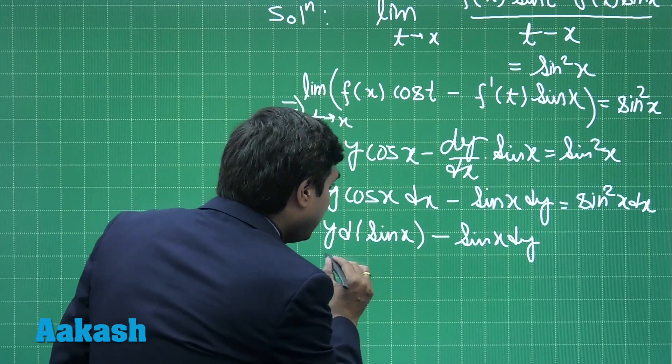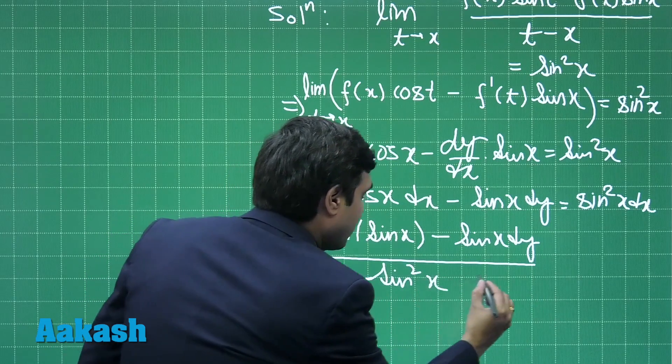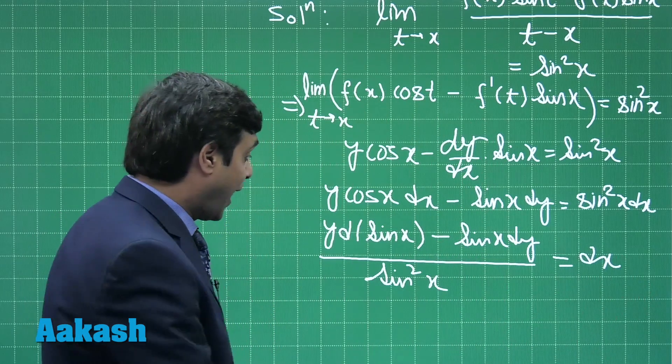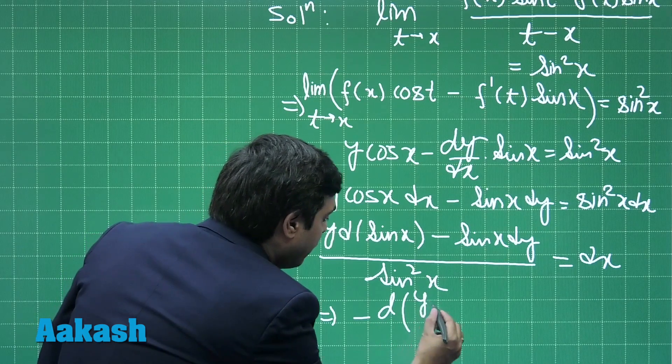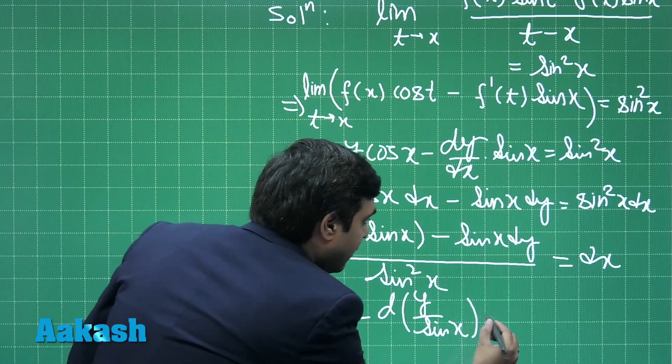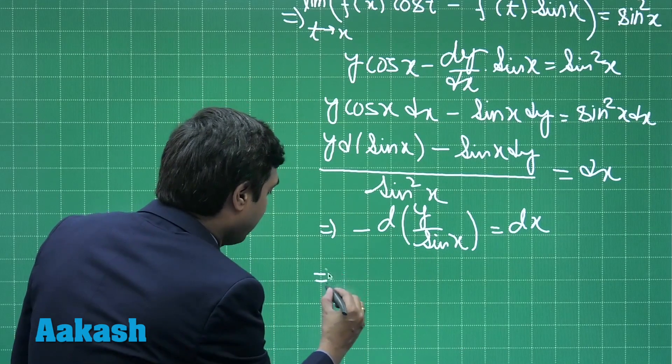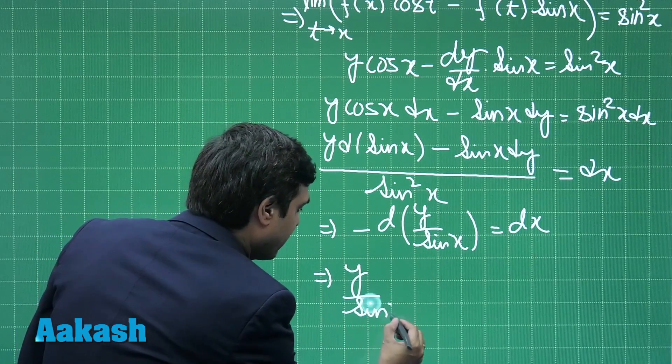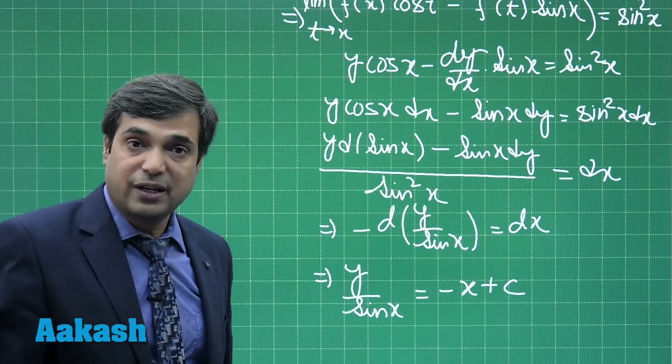If I divide it by sin²x, I get dx on the right hand side. I can read it as -d(y/sin x) = dx. Integrating both sides we have y/sin x = -x + c. This point is clear.